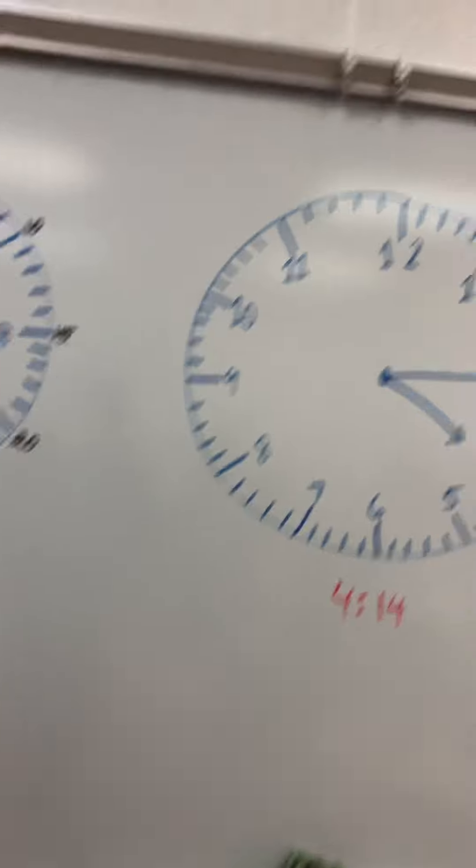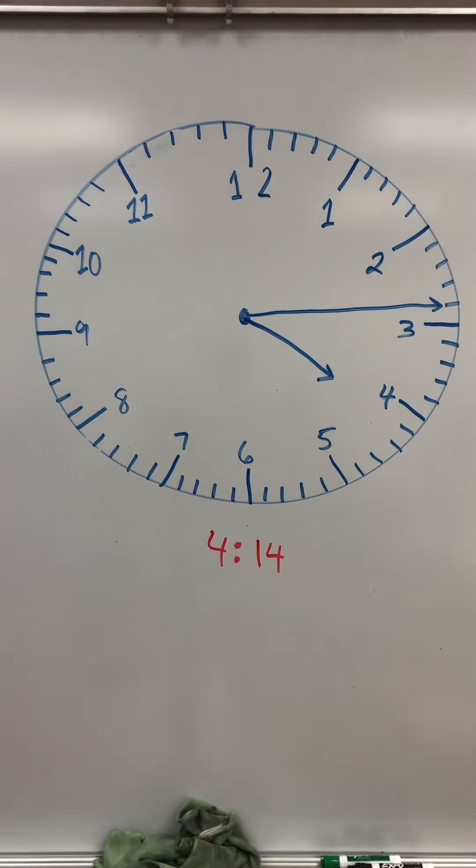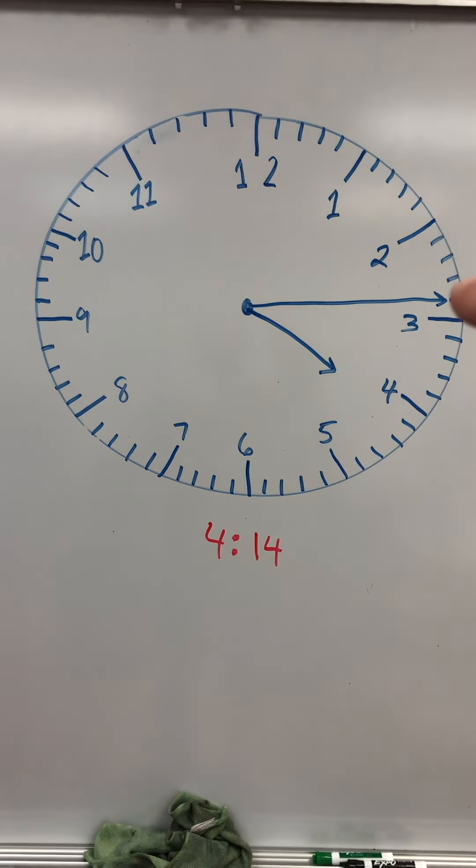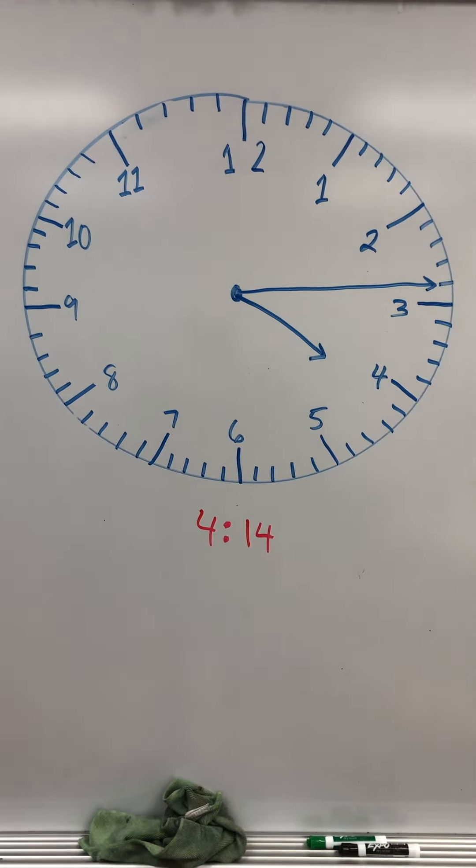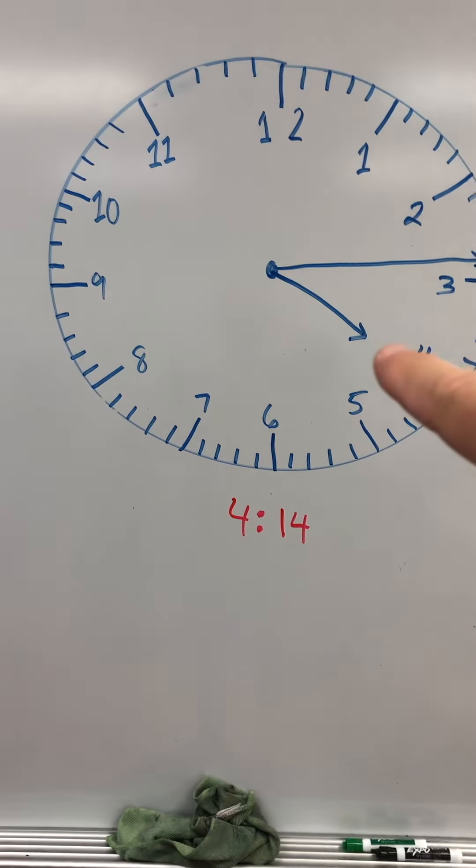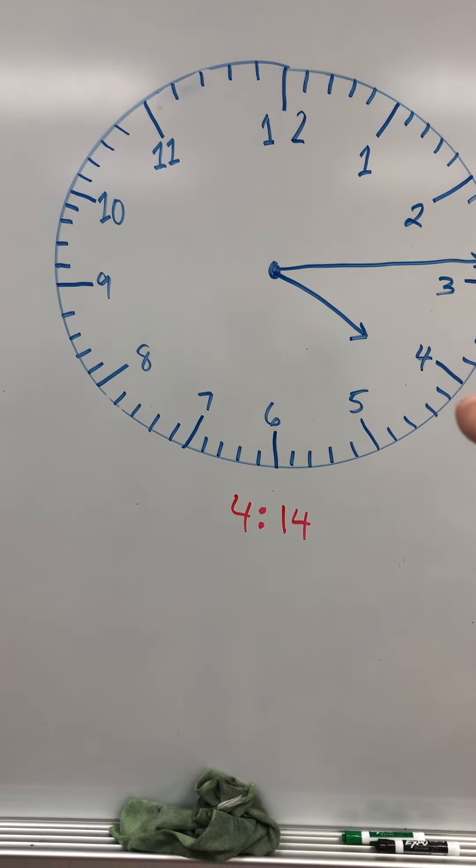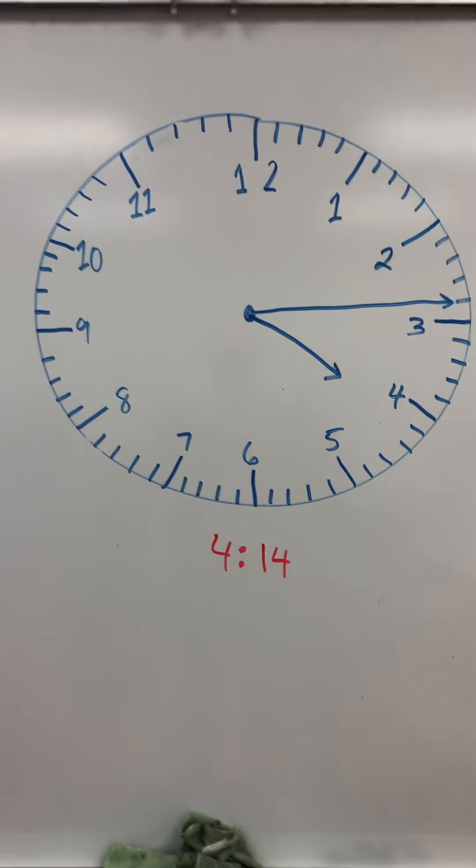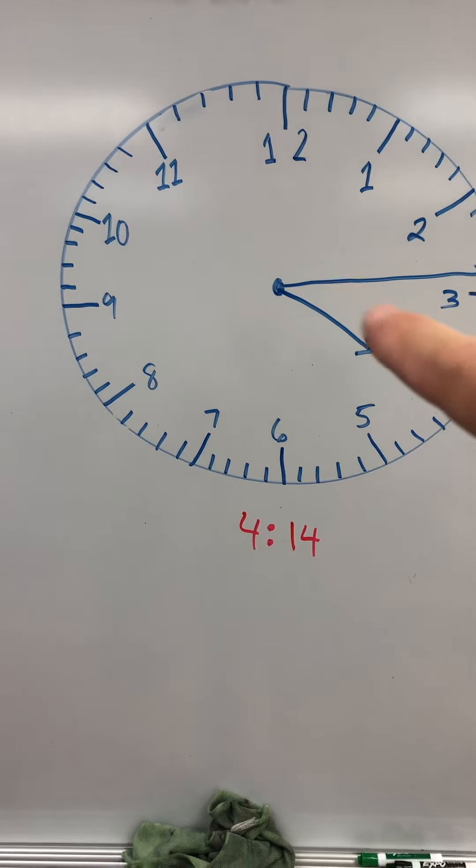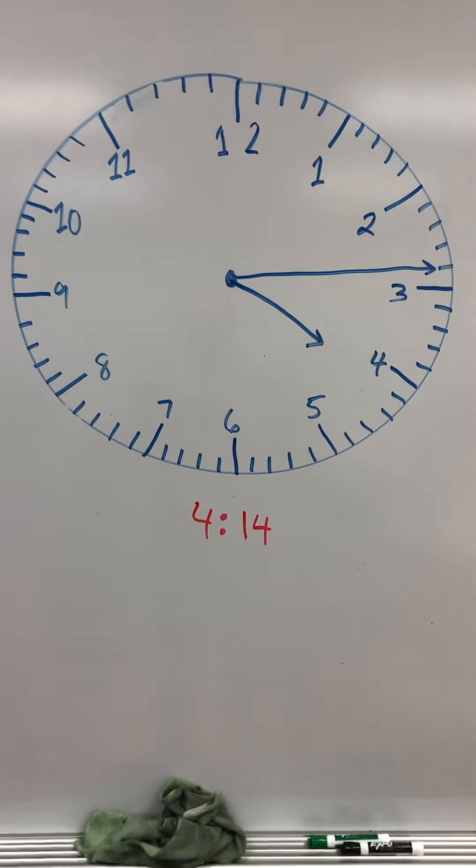So here is going to represent 4:14, right? Because if this is 5, 10, this will be 14. So notice that the hour hand is a little bit after the four, not pointing directly at the four. So as long as this hour hand is somewhere between the four and the five, you're going to be in the four o'clock hour.